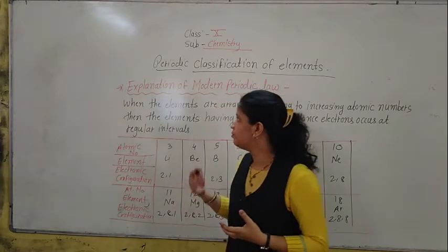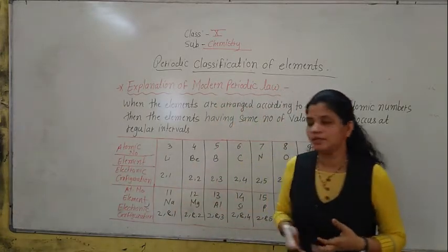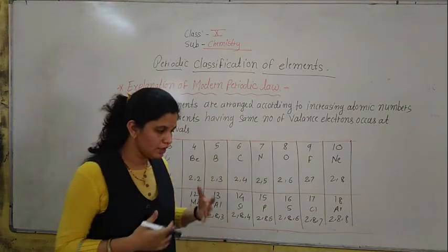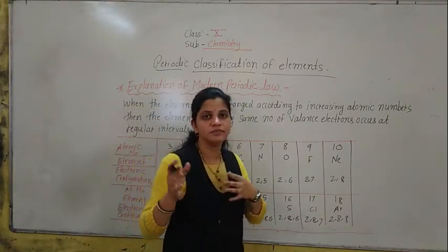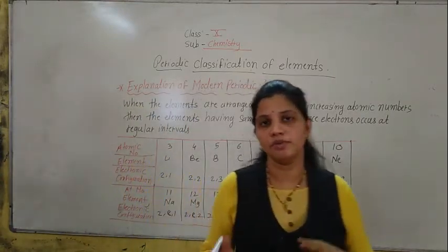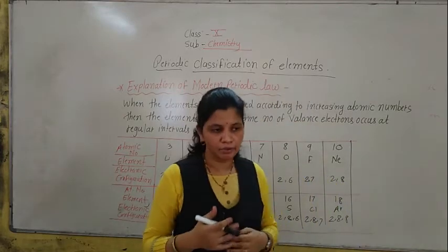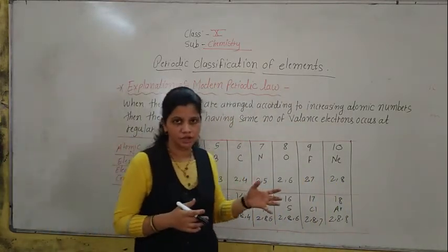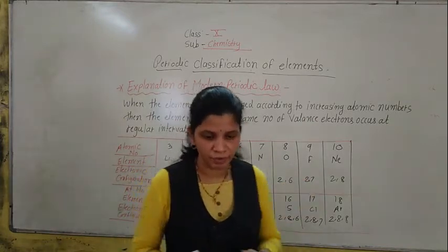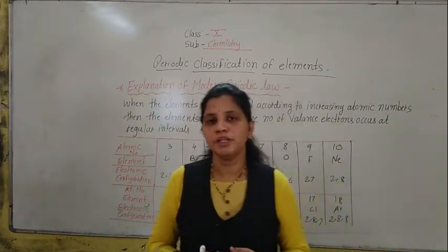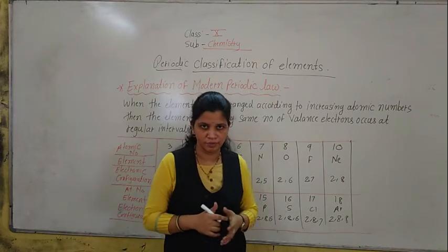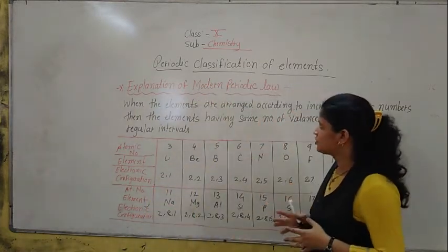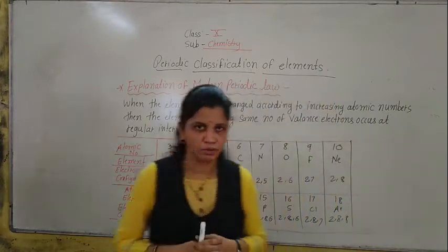So what is the modern periodic law? In modern periodic law, Henry Moseley uses the periodic law — that is, the physical and chemical properties of elements are arranged according to the increasing order of their atomic number. The modern periodic law is based on the atomic number. So now here we will see some explanation of the modern periodic law.